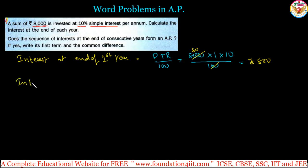Interest at the end of the second year: for two years, use the same formula PTR/100. So ₹8,000 times 2 times 10 divided by 100. Simplify: 80 times 2 is 160, times 10 is ₹1,600 interest at the end of the second year.